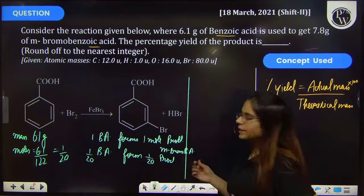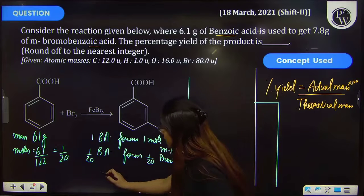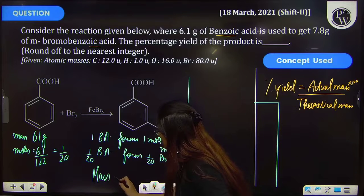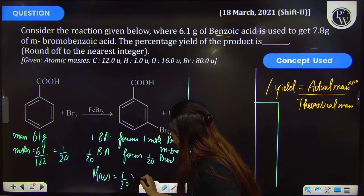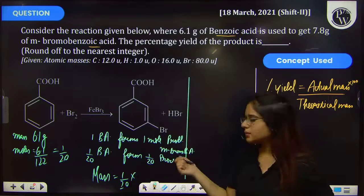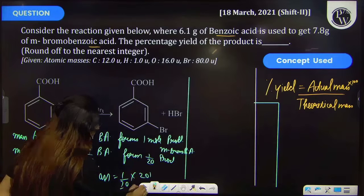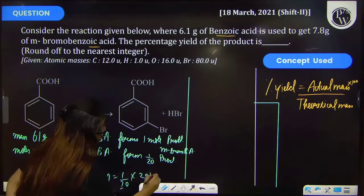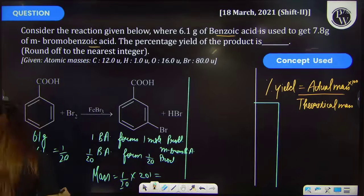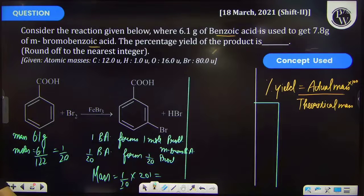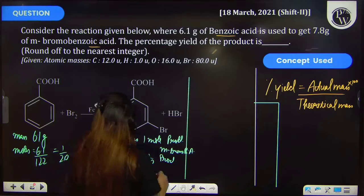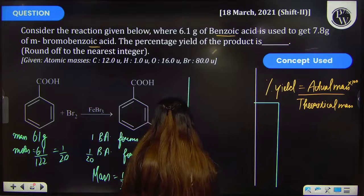Further, we have to calculate the mass. So for mass, we have to multiply by the molecular mass. Mass is equal to mole into molecular mass. Molecular mass of this compound is 201 gram per mole. So therefore, the answer will be 201 by 20.